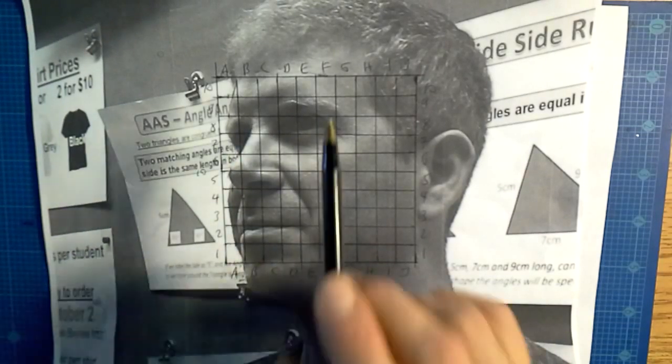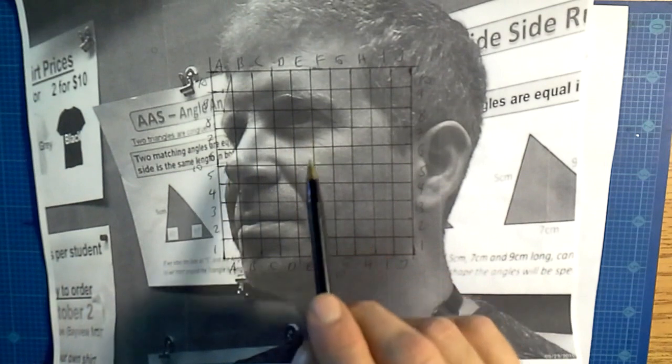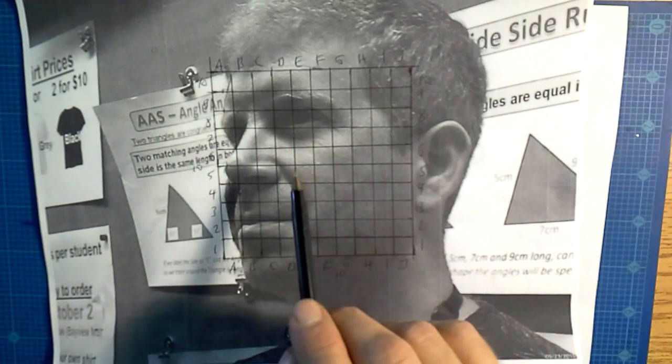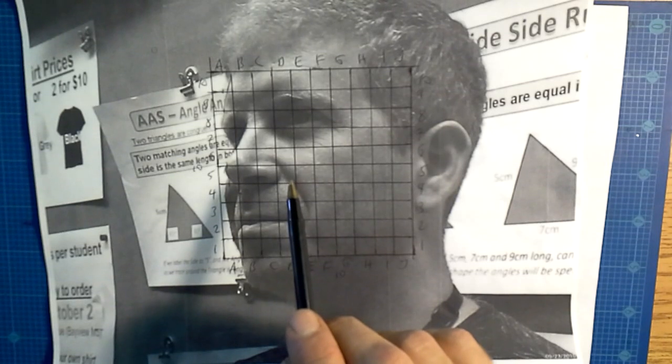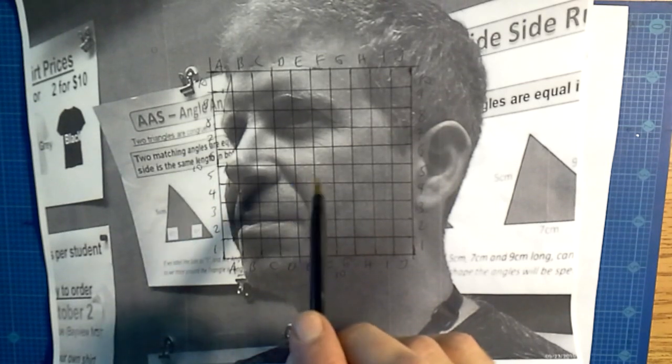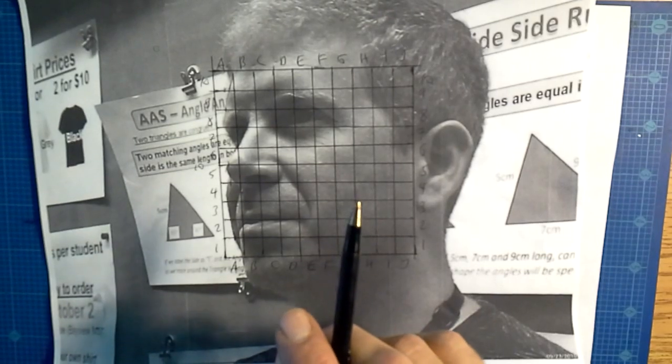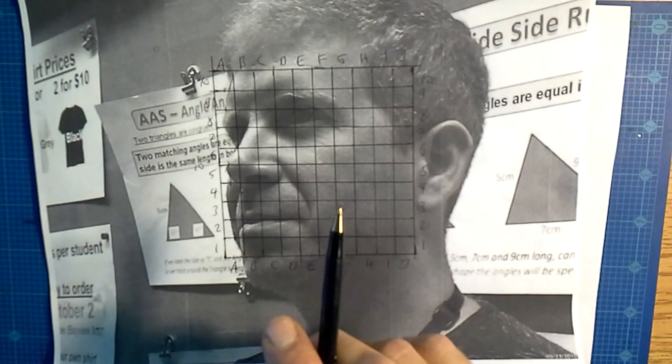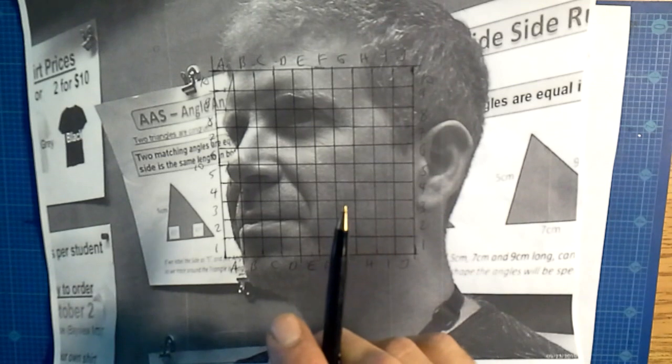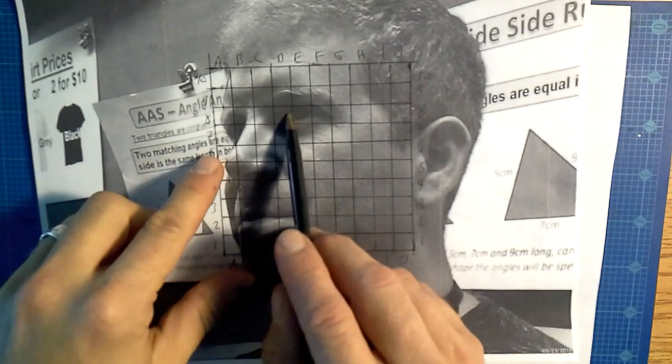Because if you look at people, their eyes are extremely detailed. And if you make the slightest difference or make an eye a millimeter thinner or wider, it will look like a different person because they're very, very small.